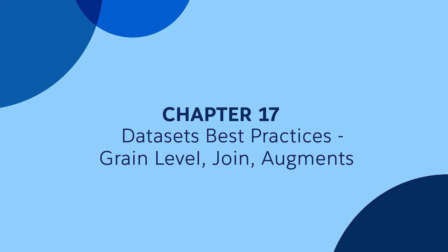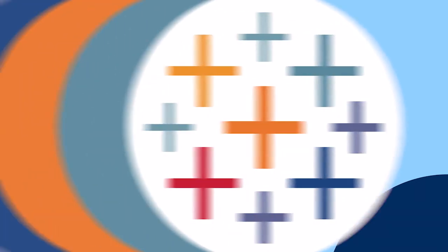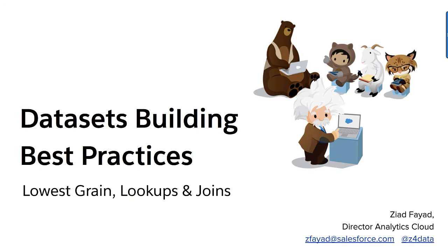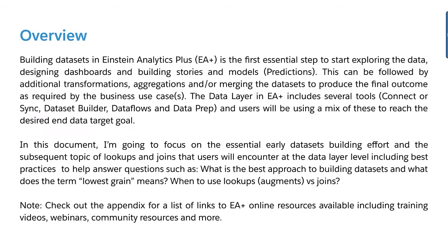Now that we have seen how to build a data set using the data set builder and using recipes to add the right fields or possibly combine data sets together, we're going to go through some of the best practices when creating data sets and understand a little bit deeper what the lowest grain is, what a lookup is, and the difference between lookups and joins.